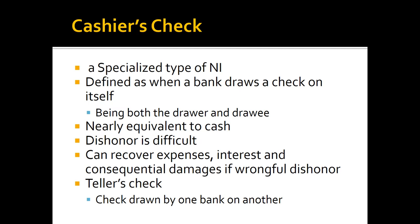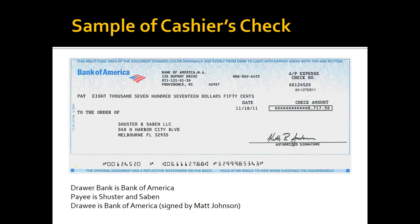The first type of specialized check we're going to talk about is a cashier's check. If you look at page 515 of your text it has a picture of one, and I cropped a Bank of America one. The drawer here is Bank of America — that's against whom it's being paid. The drawee, who is going to get the money, is Schuster and Sabin LLC, and the person who signed it is Matt Johnson, signing for the bank.